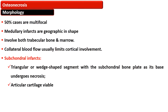About half of the cases of osteonecrosis are multifocal. Medullary infarcts are geographical in appearance — irregular in shape — and involve both trabecular bone and marrow, while the cortex, which has collateral blood supply, is usually spared. The subchondral infarct is a triangular or wedge-shaped segment in which the subchondral bone plate and its base undergo necrosis. The nutrient supply of the articular cartilage is through diffusion, so it is spared.